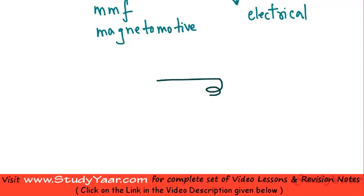Let's say you have a coil through which current is flowing. We know that whenever current flows in a loop we have magnetic field.